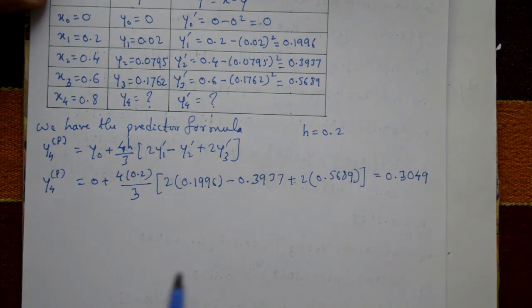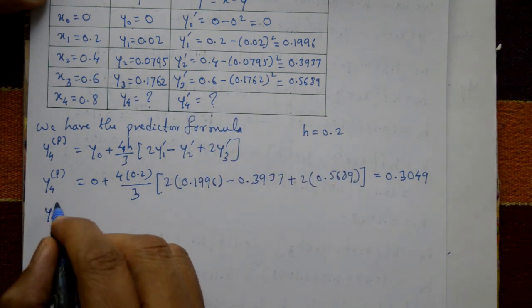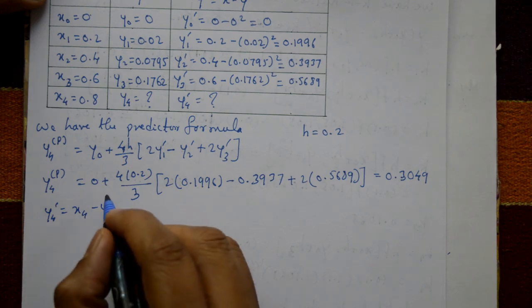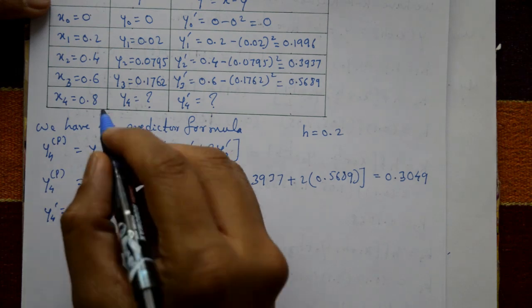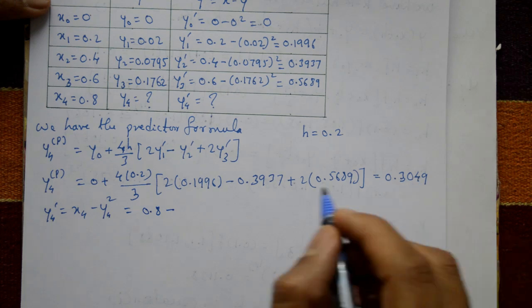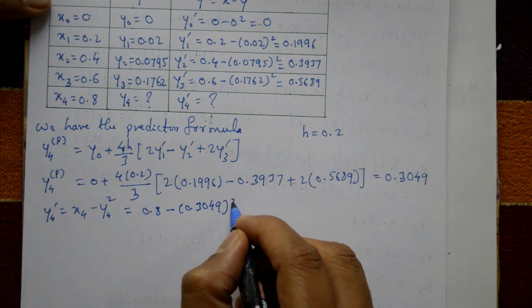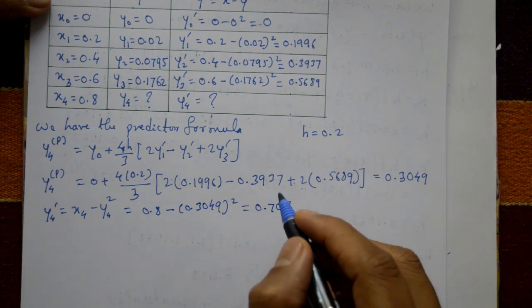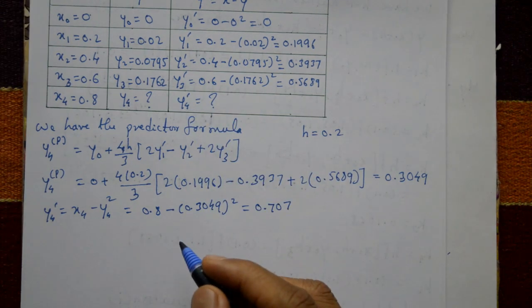Next, we require y4'. Using the formula y4' = x4 - y4², where x4 = 0.8 and y4 is the predictor value 0.3049: y4' = 0.8 - (0.3049)² = 0.707. This is the predictor formula answer.